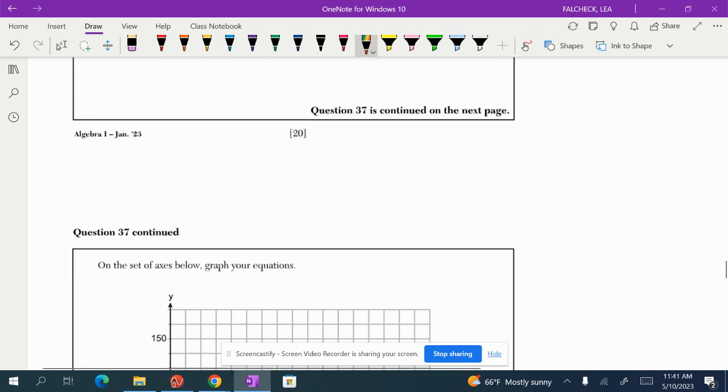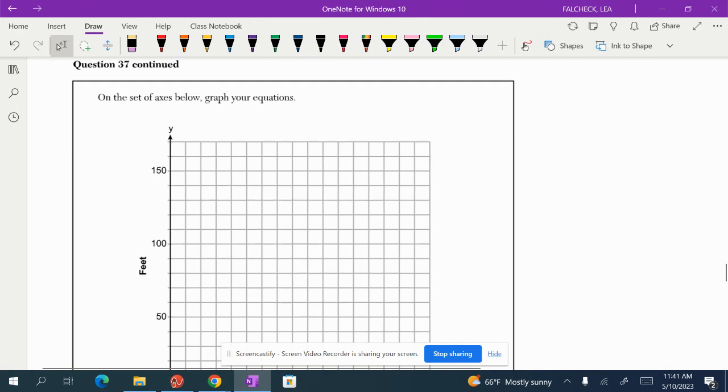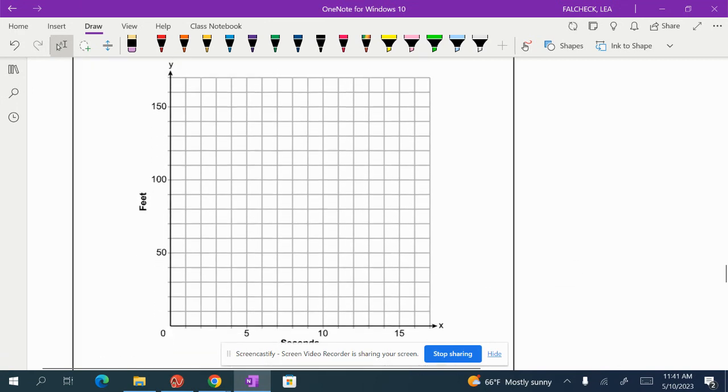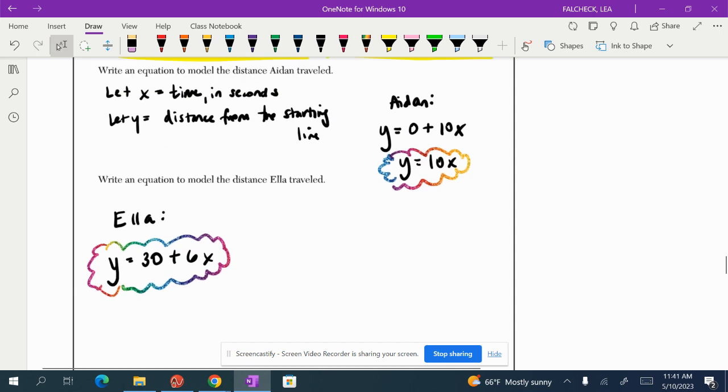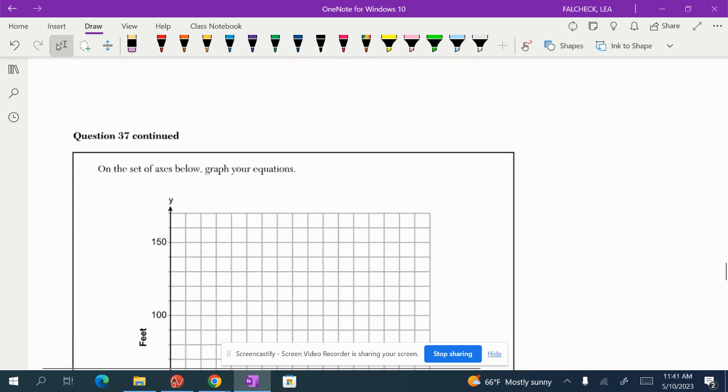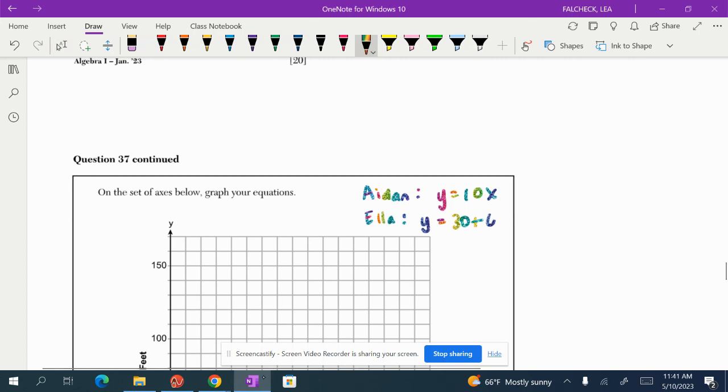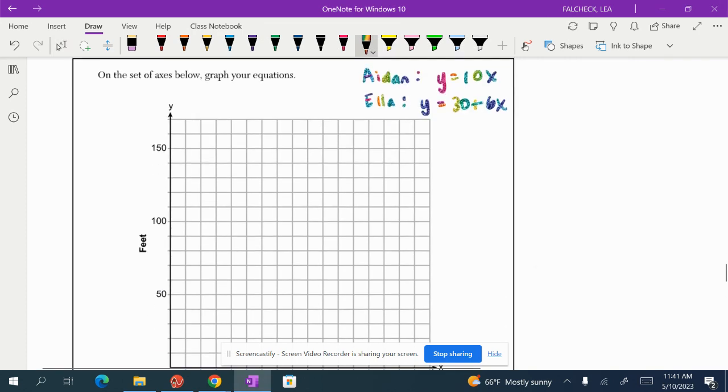So these are our two equations. Now it says on the set of axes below graph your equation. So let's graph Aiden's first. Aiden's, I'm just going to write them here so I don't have to keep going back and forth. Aiden's is y equals 10x and Ella's is y equals 30 plus 6x. Okay, so let's graph Aiden's first.